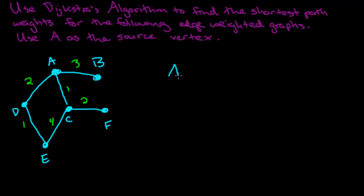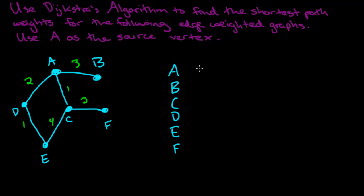I'll start by writing all of the vertices in a table, starting with A as the source: A, B, C, D, E, and F. You may notice this is the graph we used in the original video describing the algorithm. We start off with saying that the label of vertex A is zero, because it takes weight zero to get from A to itself. We set all of the other labels equal to infinity.